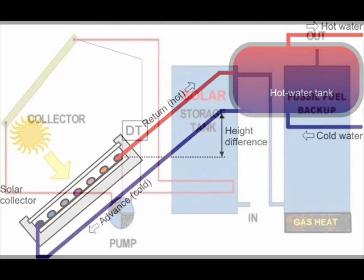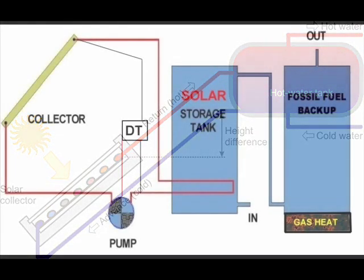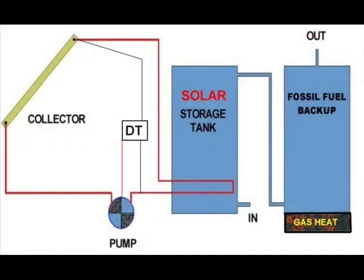Active solar hot water systems use pumps and differential controllers to automate the process of collecting and storing solar heat. So storage tanks may be located in basements far from the area of heat collection. Active systems do consume some power, but the value of heat collected is great compared to the power used to circulate water.